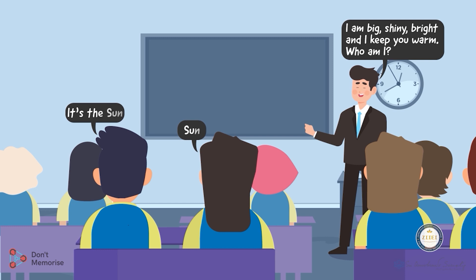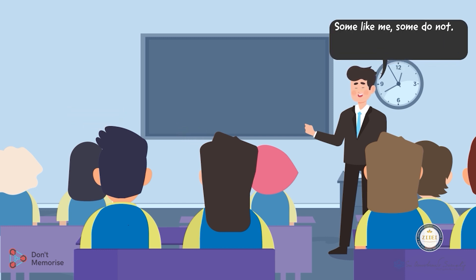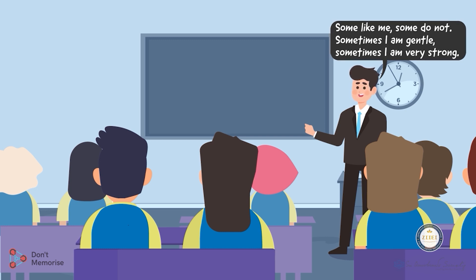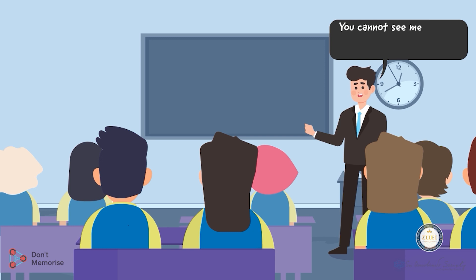Another hint can be given by saying: 'Some like me, some do not. Sometimes I'm gentle, sometimes I'm very strong. You cannot see me, you can only feel my presence. Who am I?' The possible responses will be air or wind.